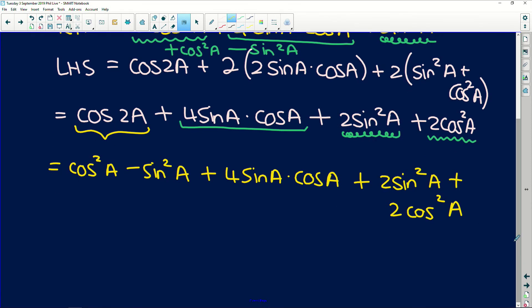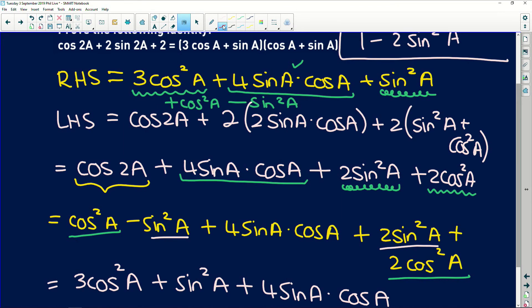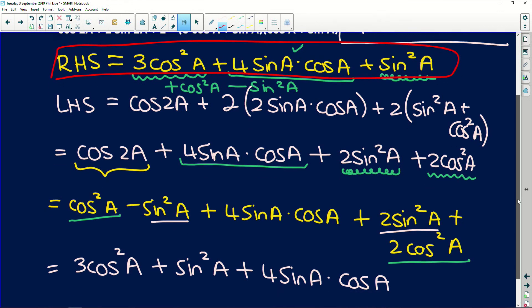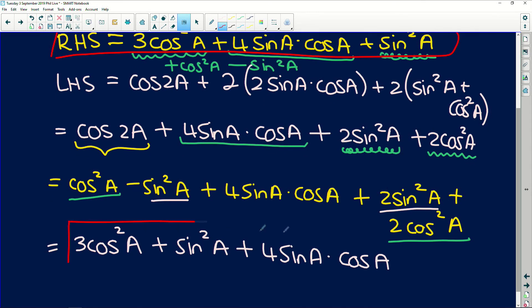So now if we look at like terms, cos squared A plus 2 cos squared A is going to give us 3 cos squared A. Sine squared A, negative sine squared A plus 2 sin squared A just gives us 1 sine squared A. And this middle term is on its own, so 4 sin A multiplied by cos A. And if we look up here, what we wrote out originally for the right hand side was this whole expression here, and what we've now got the left hand side to do is look exactly the same. And therefore you have to conclude, therefore left hand side equals right hand side.